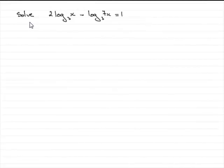Now in this last part of the question we've got to solve 2 log of x in base 3 minus the log of 7x in base 3 equals 1. So how do we do this?